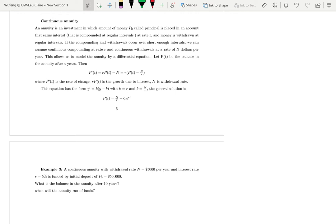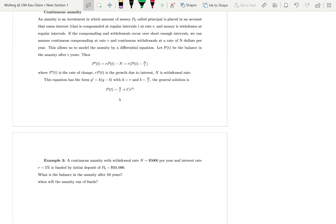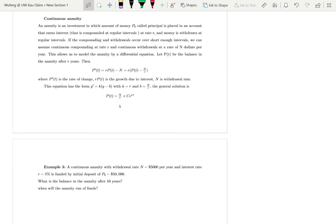The continuous annuity is an investment where an amount of money P0, called the principal, is placed in an account that earns interest. At the same time, the money is withdrawn at regular intervals. If the compounding and withdrawal occurs over short enough intervals, we can assume continuous compounding at rate r and continuous withdrawals at rate of N dollars per year. This allows us to model the annuity by a differential equation.